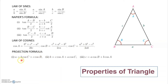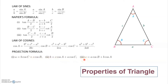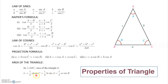The projection formula for this triangle is a equals b cos C plus c cos B, and similarly for b and c. The area of the triangle can be written as half into ac into sin B, or half into bc into sin A, or half into ab into sin C.